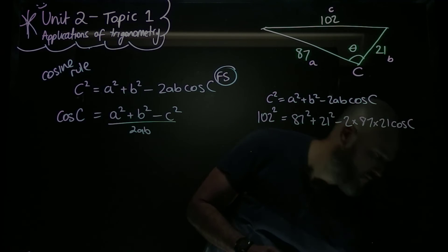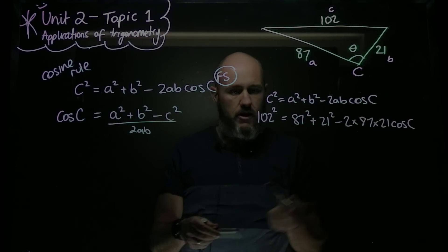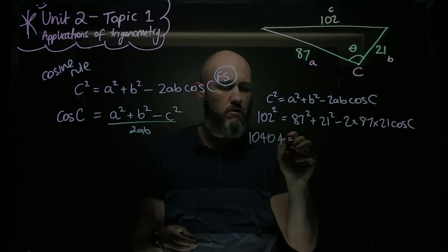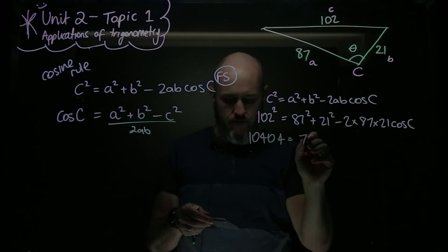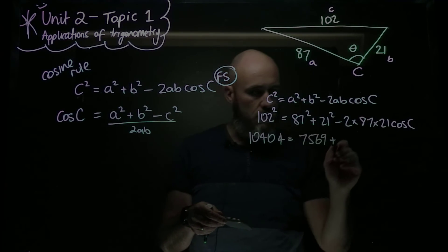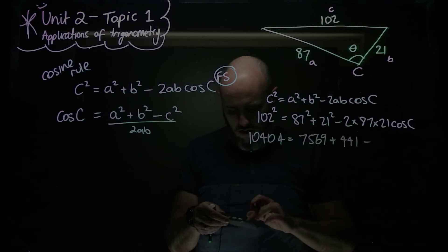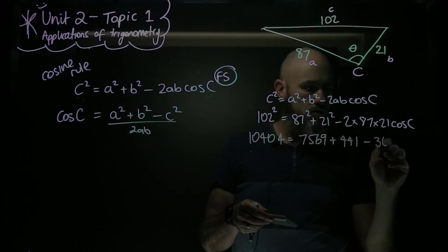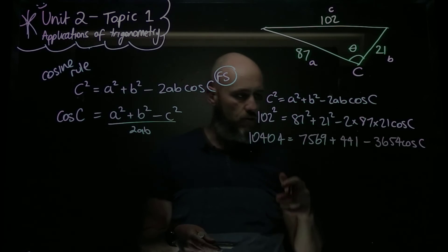102 squared equals 87 squared plus 21 squared minus 2 times 87 times 21 cos C. So I'm going to do a little bit of simplifying now. I get 102 squared, so I get 10404. Then 87 squared, I get 7569. Then 21 squared, 441, minus 2 times 87 times 21, which is 3654 cos C.